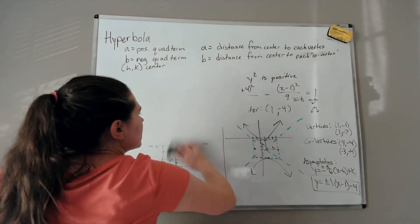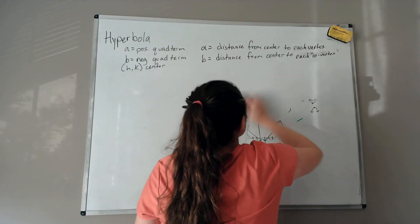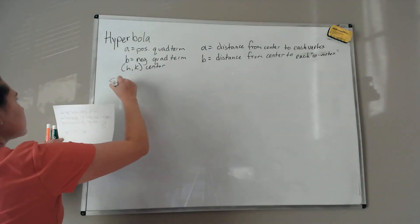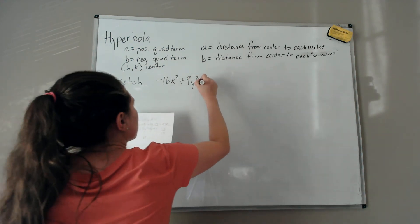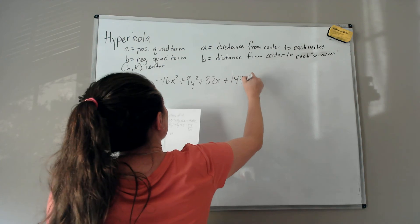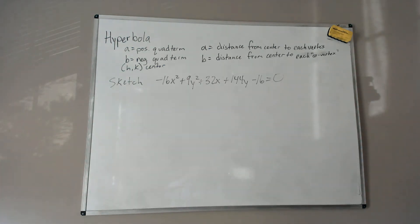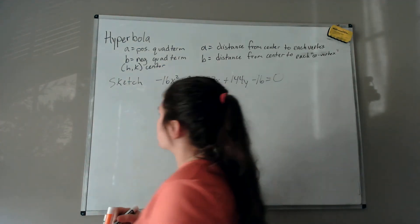For the third example, we'll sketch the hyperbola given: −16x² + 9y² + 32x + 144y − 16 = 0. This is in general form, so we need to convert to standard form. We confirm it's a hyperbola because there are two quadratic terms — one positive, one negative.